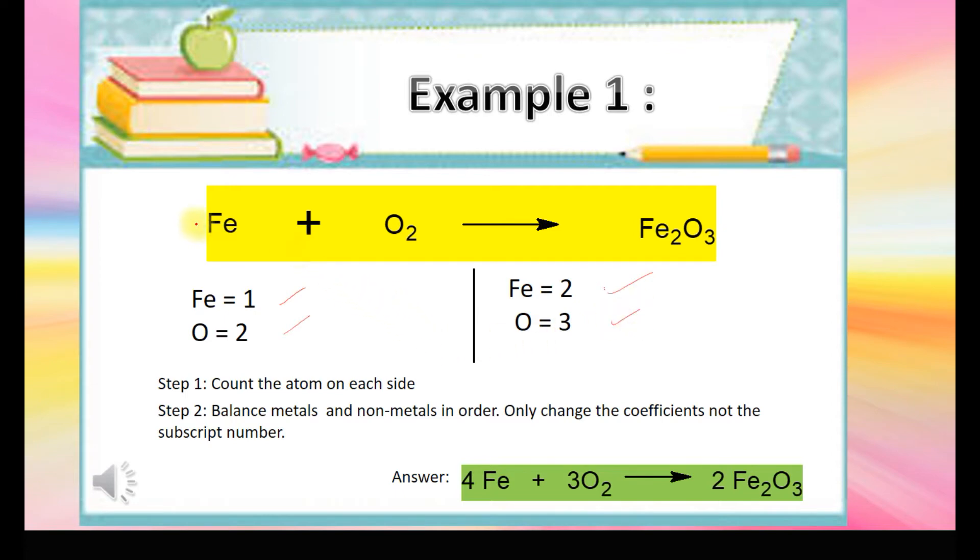So we need to put 2 on iron at the left side. We look at the oxygen: it's 3 on the right side but only 2 on the left. So we need to make oxygen become 6 by adding 2 iron oxide. Now on the left side we put 3 oxygen to make it 6 oxygen atoms. Finally to make it the same, iron becomes 4 atoms on the left side. The answer is 4 Fe plus 3 O2 produces 2 Fe2O3.